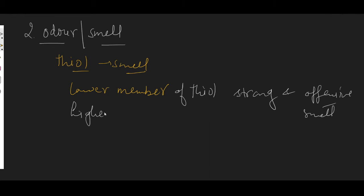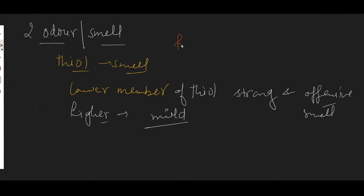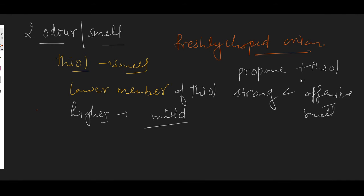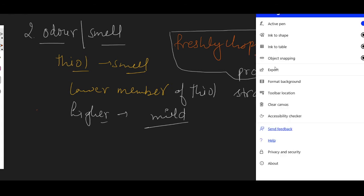However, in higher members, the smell becomes milder and less intense. Lower members have a stronger smell; higher members have a reduced smell. An important point to remember: freshly chopped onion has a smell due to the presence of propane-1-thiol. So if asked, the smell of freshly chopped onion is due to propane-1-thiol.